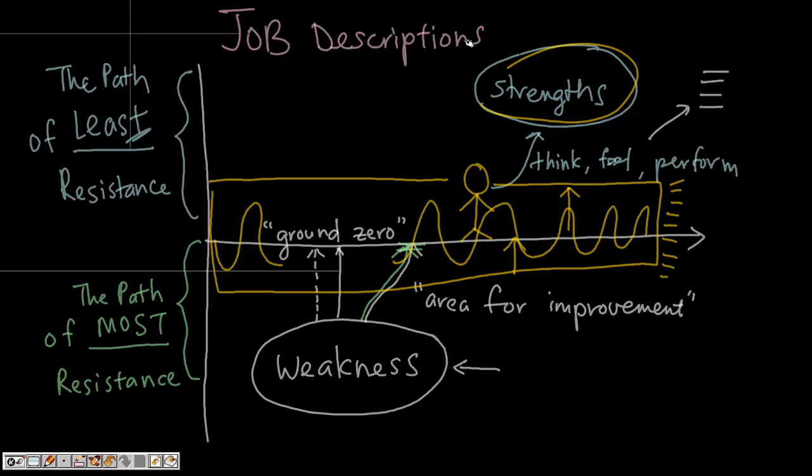At the list of responsibilities and daily tasks that you have now, how many of the daily tasks, routines, or responsibilities fall within the path of least resistance, or how many fall within the path of most resistance?